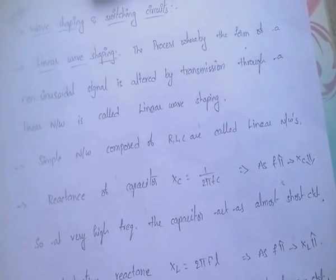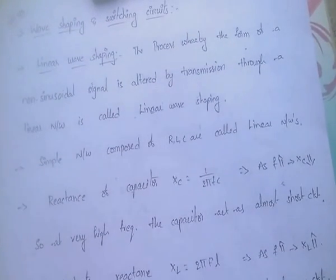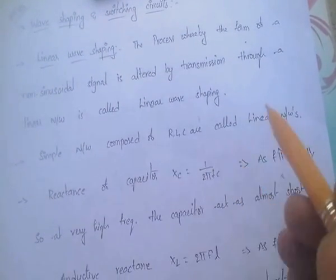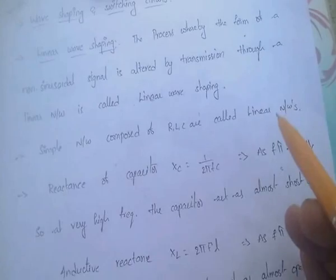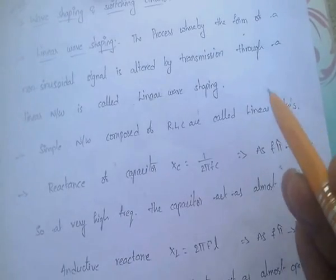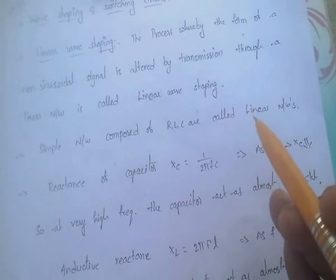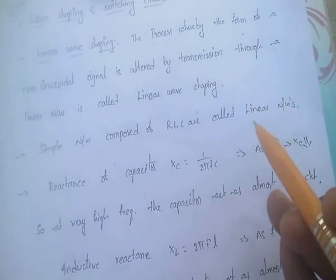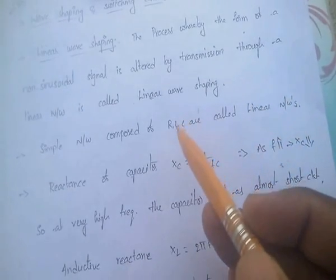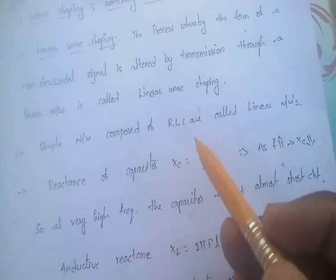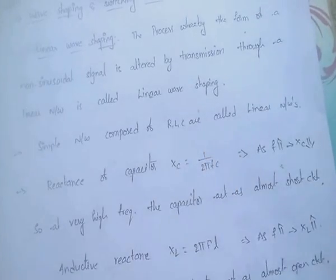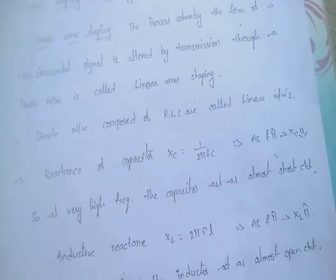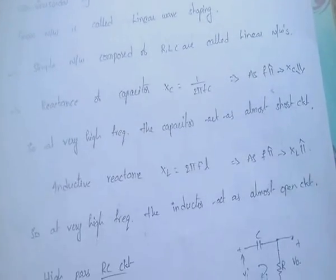Simple networks composed of resistor, inductor, and capacitor are called linear networks. Networks composed of RLC components are called linear networks.